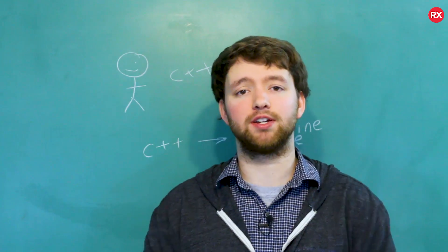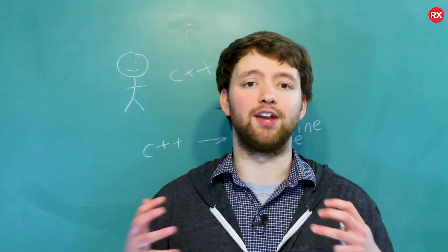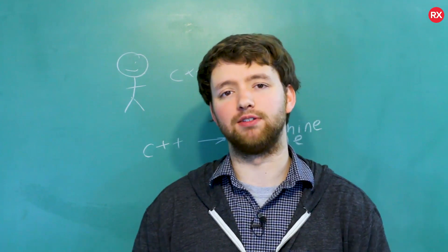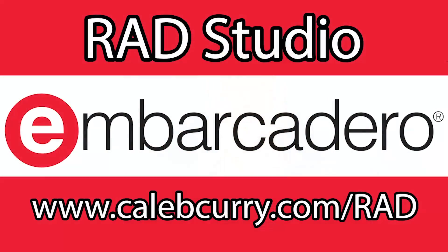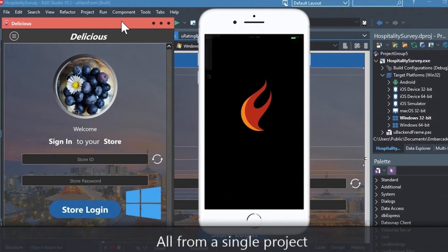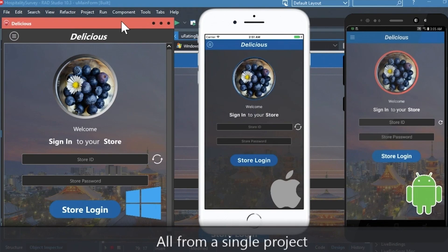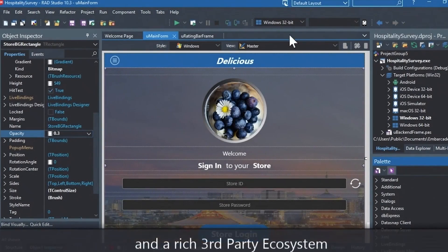So with that, our sponsor is Embarcadero and they have two products you might be interested in, C++ Builder and Rad Studio. Rad Studio is the IDE of choice for C++ development. Quickly build native, mobile, and desktop applications from a single C++ code base and deploy to Windows, Mac, iOS, and Android. With Rad Studio, user interface design has been made easy with hundreds of pre-built components for cross-platform development.